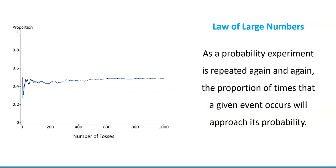As the probability experiment is repeated again and again, the proportion of times that a given event occurs will approach its probability. Here is a chart showing the number of tosses. Along the horizontal line we have number of tosses, and along the vertical line we have proportion of heads. As we have a small number of tosses — like 10, 15, 20, 100 — we can see that the proportion of heads varies largely. In some cases, the proportion of heads can be like 0.25; in some cases it's close to 0.5. But as the number of tosses increases, the proportion of heads for those experiments gets closer and closer to 0.5.